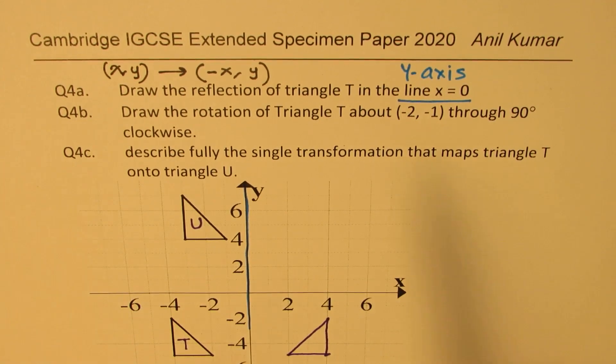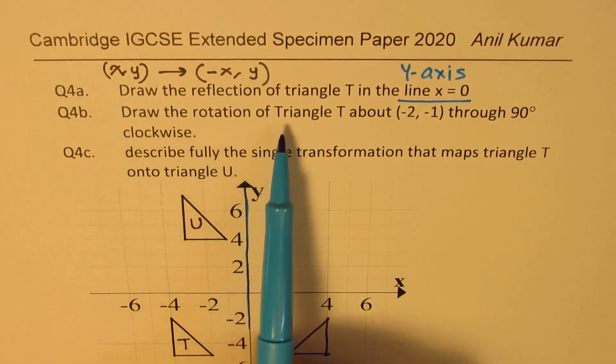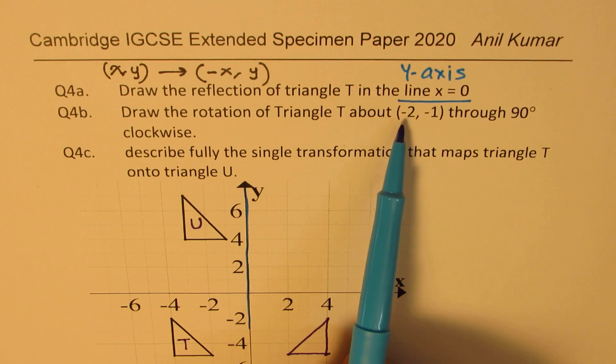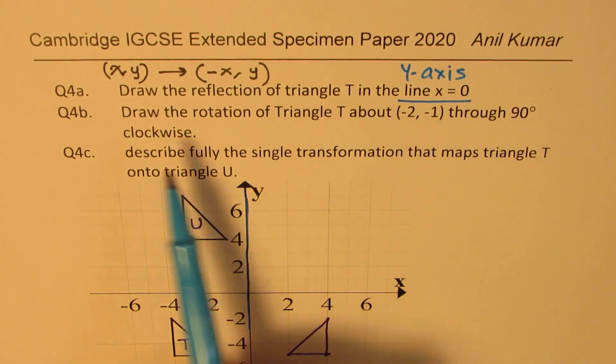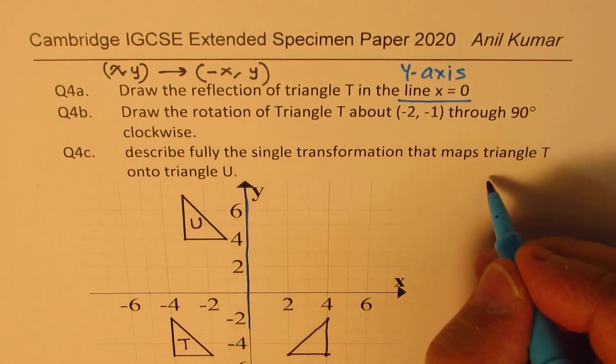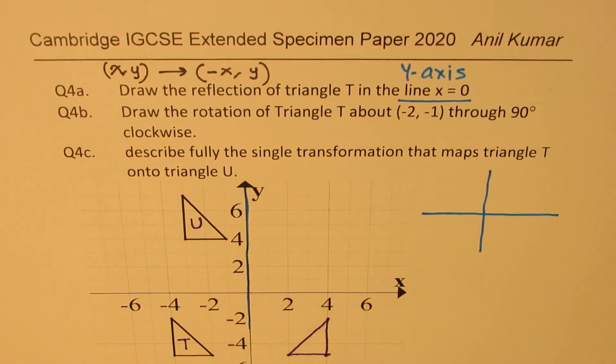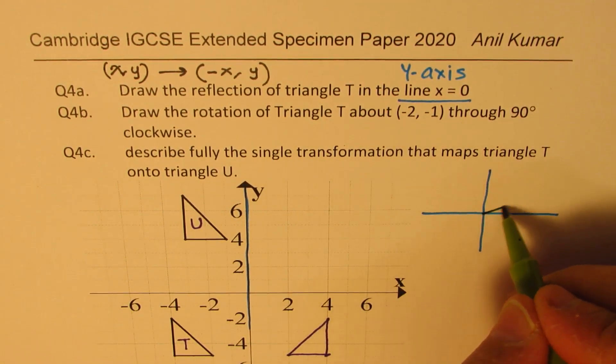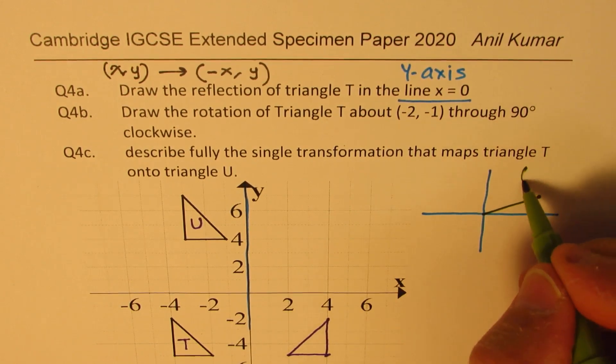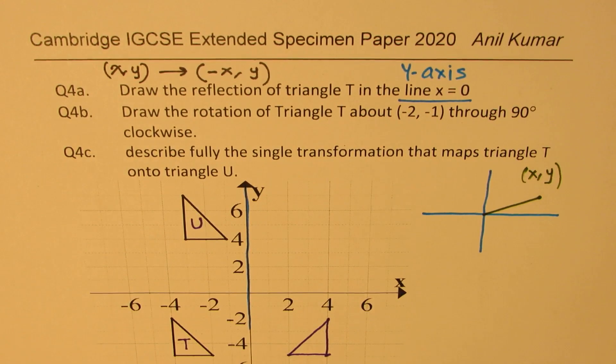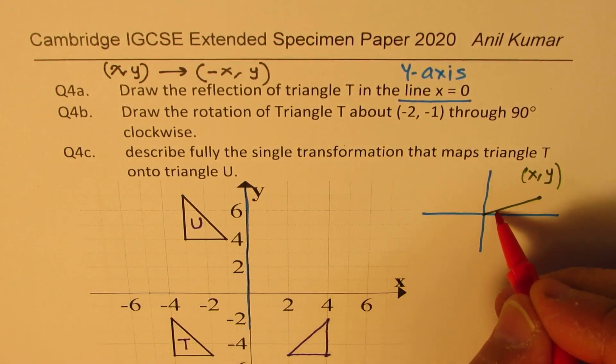Part B is: draw the rotation of triangle T about minus 2 minus 1 through 90 degrees clockwise. How do we do that? And what kind of transformation takes place? Now, if you have a point x, y in quadrant 1, for example.